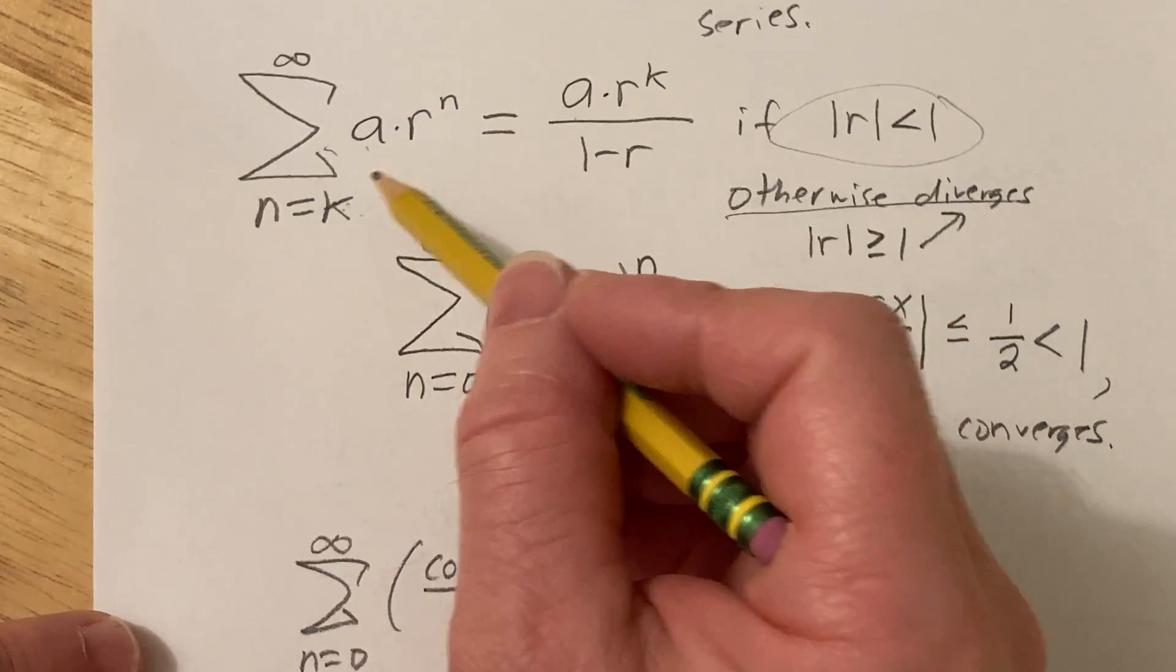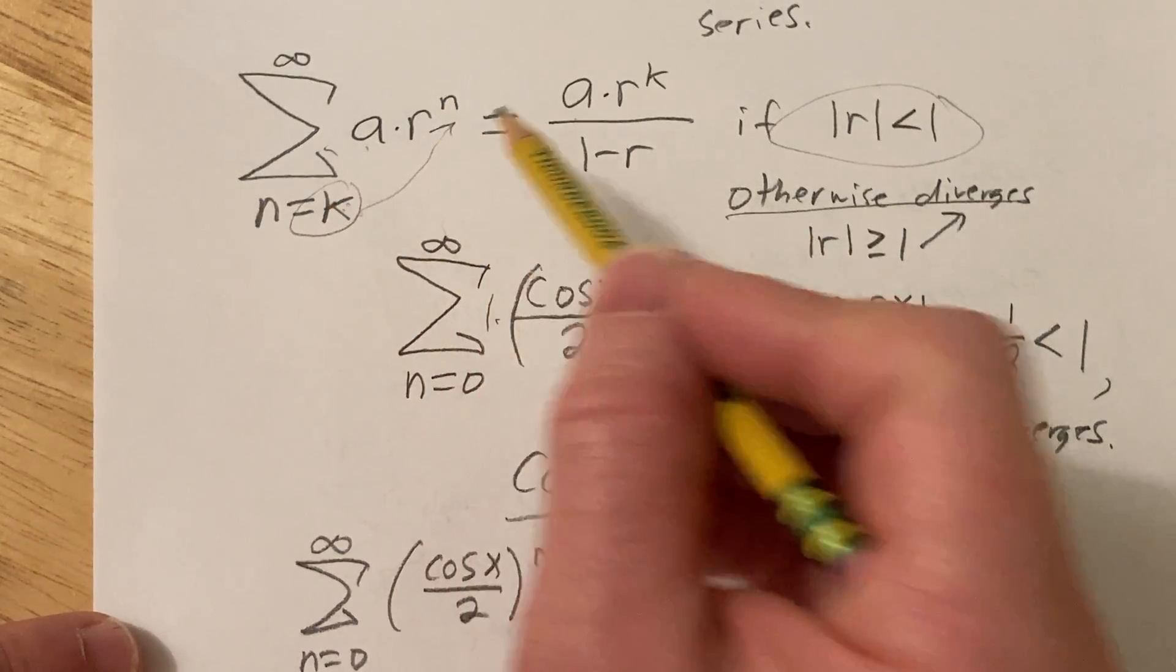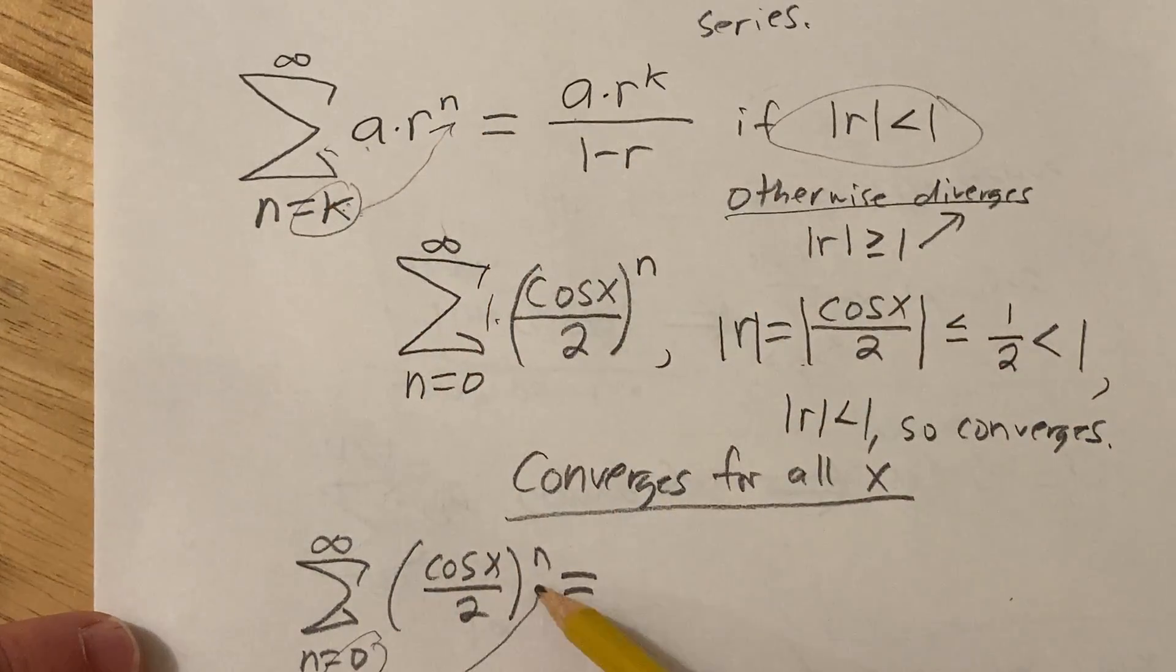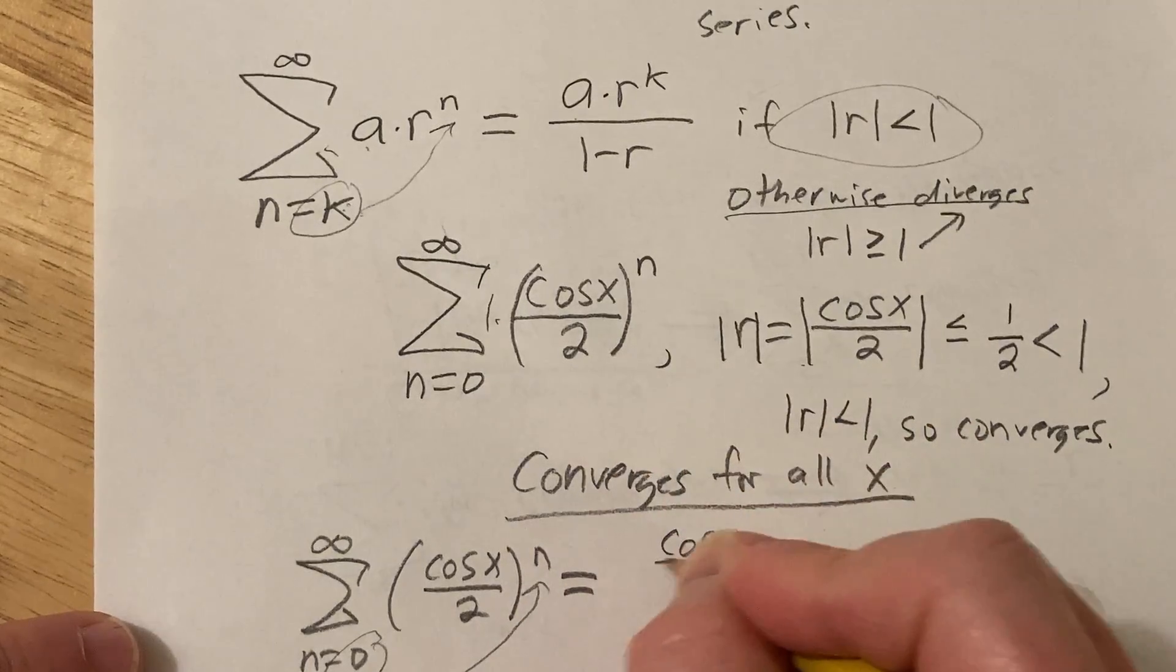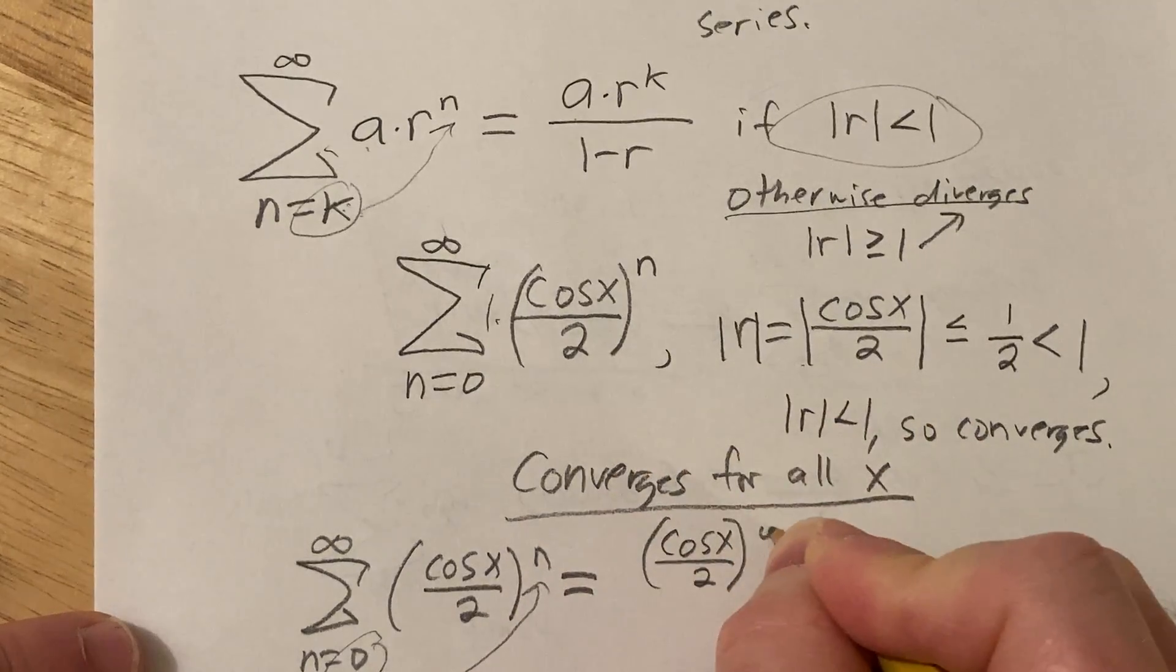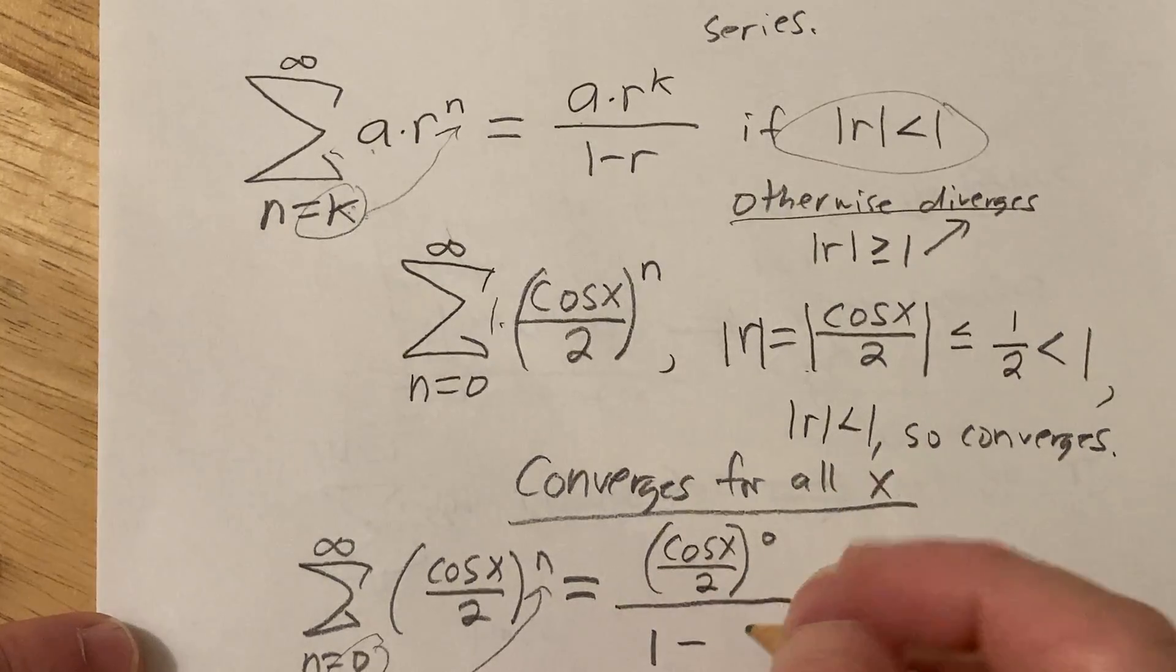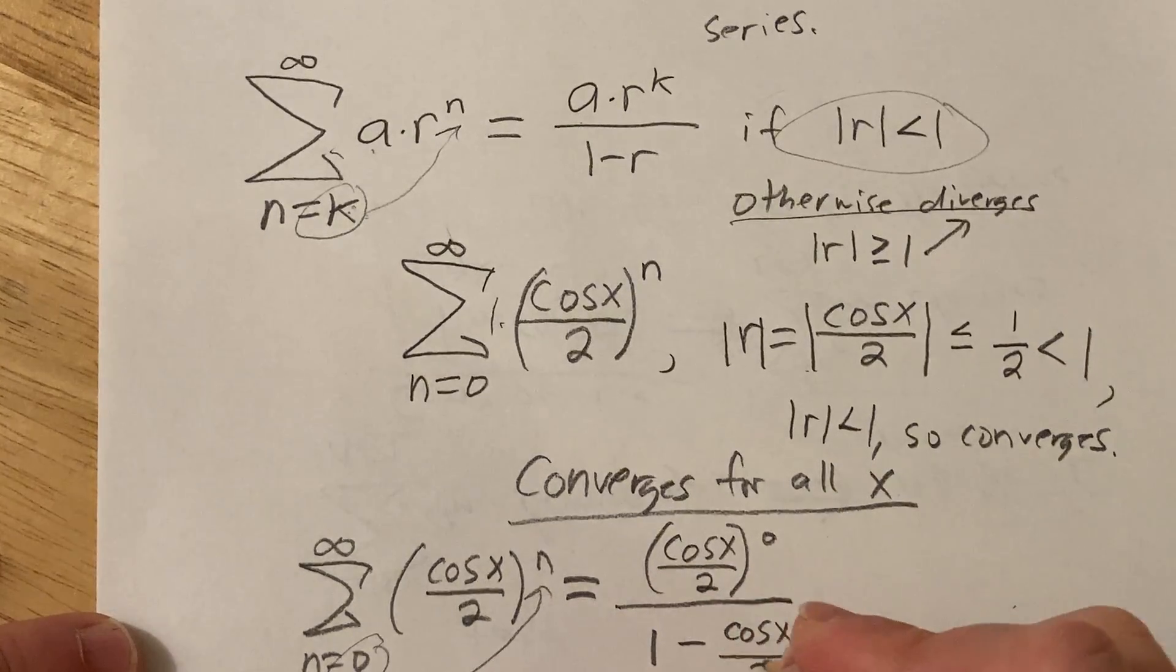And if you look at the formula, it just basically says you take whatever's here and you plug it in. So you take whatever's here and you plug it in, and that goes up top, so it'll be cosine of x over 2 to the 0 over 1 minus r, and r is cosine x over 2.